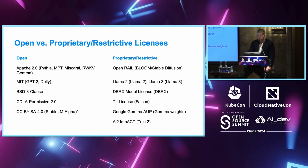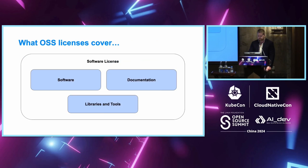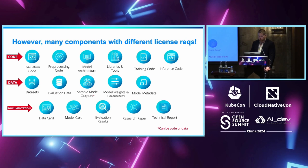Here's a quick glimpse at some open licenses we're all familiar with, contrasted with proprietary restrictive licenses that models have been released under. For example, Apache 2.0 — Mistral has adopted Apache 2.0 for a lot of their models — contrasted with Stable Diffusion, which uses OpenRAIL, a restrictive license. Conventional open source software licenses cover software, documentation, and associated libraries and tools. But deep learning is much more complex, with many different artifacts involved in developing models.